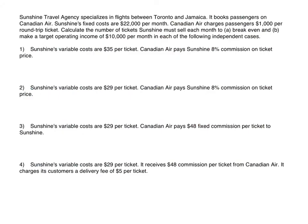Here we have Sunshine Travel Agency, which specializes in flights between Toronto and Jamaica and books passengers on Canadian Air. Sunshine's fixed costs are $22,000 per month. Canadian Air charges passengers $1,000 per round-trip ticket. We need to calculate the number of tickets Sunshine must sell each month to A) breakeven, and B) make a target operating income of $10,000 per month. Since they're asking for number of tickets, we're looking for breakeven in units.